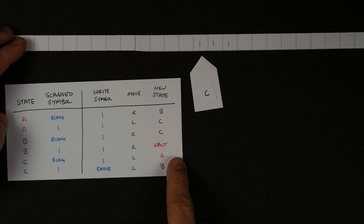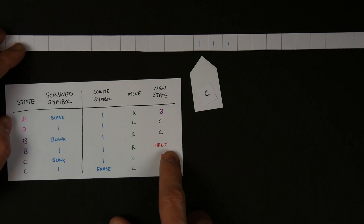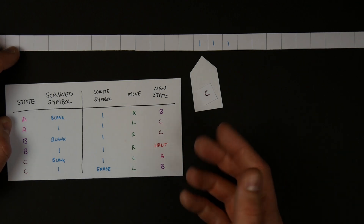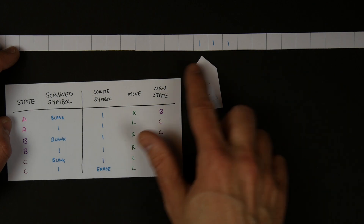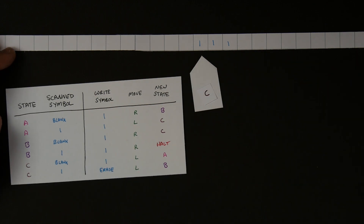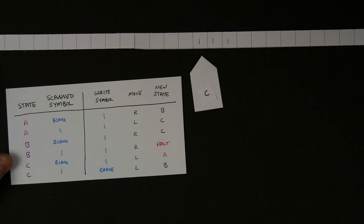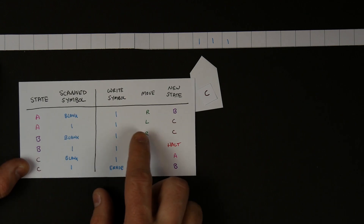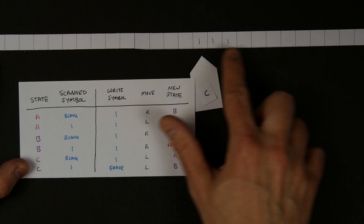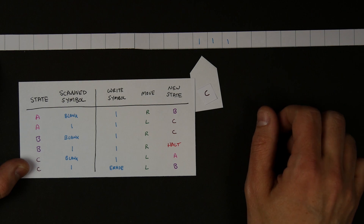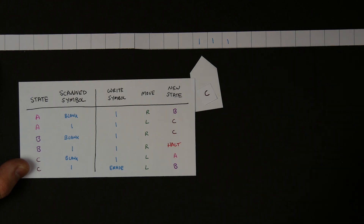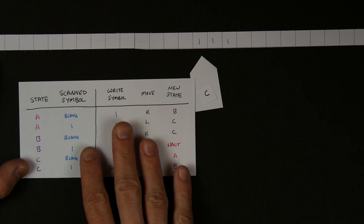It may or may not ever get there, but if it halts, whatever it's trying to compute will be on the tape for you to read. It turns out that with an appropriate table of instructions and some input encoded on the tape before the machine starts, this machine can carry out pretty much any mathematical task — you just have to set up the right table of instructions.